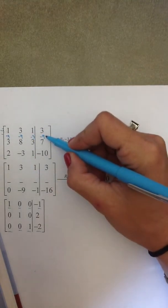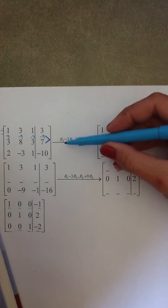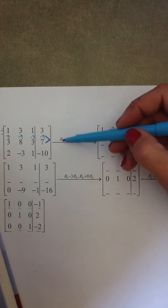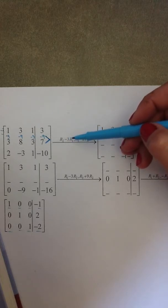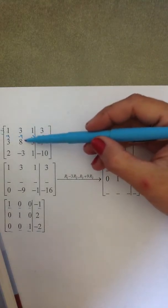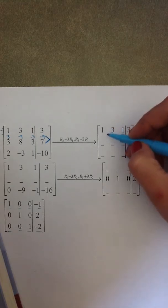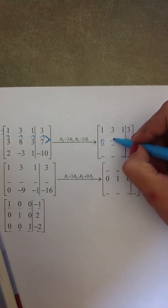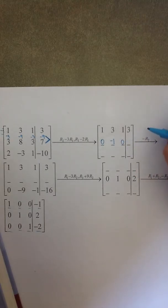Now I have these two sets of values that get added together to replace row two. Row two changes by adding it to negative three times row one. Adding the four pairs: negative three plus three is zero, negative nine plus eight is negative one, negative three plus three again is zero, and negative nine plus seven is negative two.